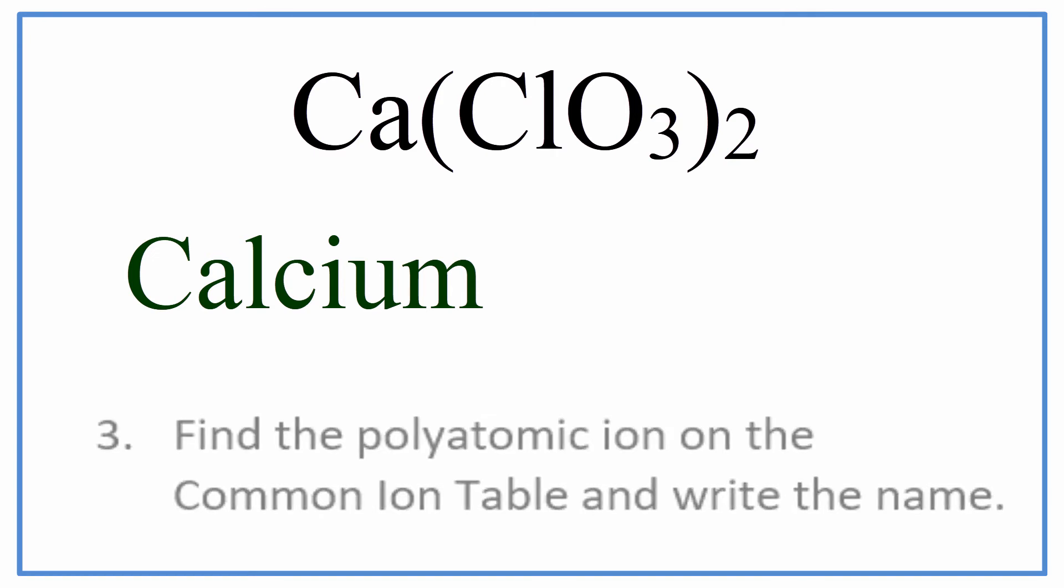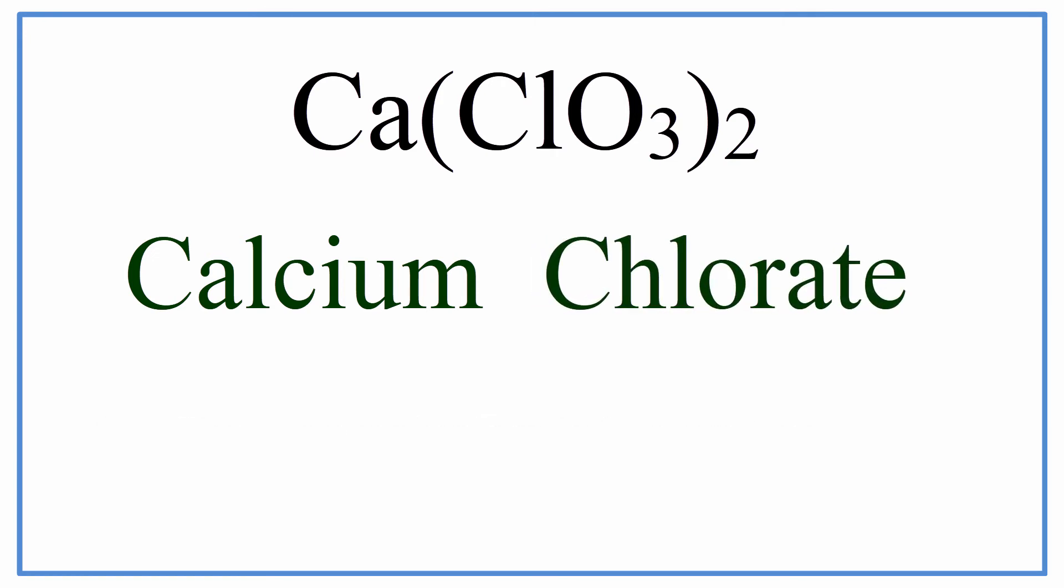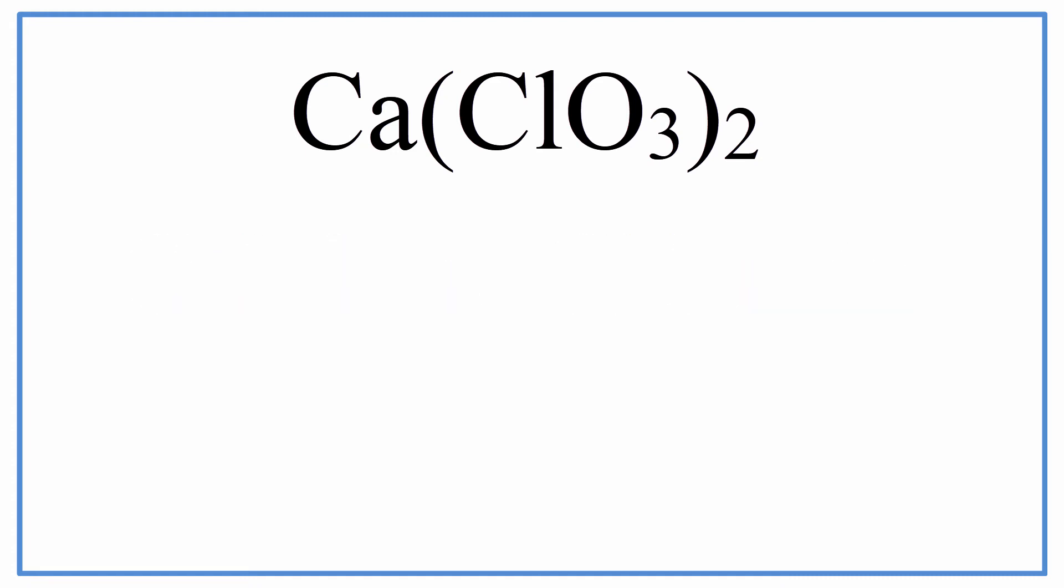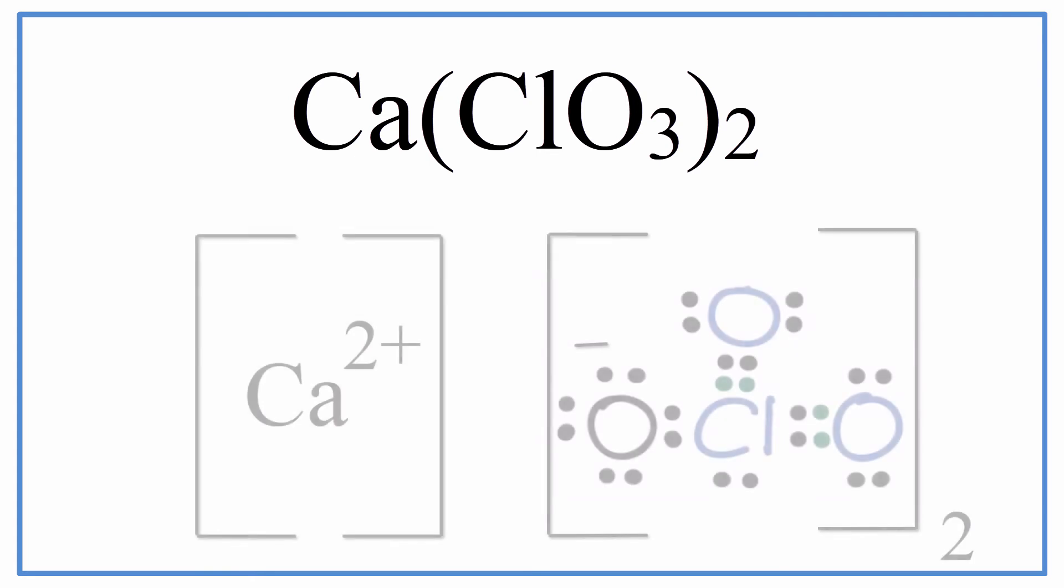For ClO3, we have chlorate, and that's the name for Ca(ClO3)2, calcium chlorate. You could also write a Lewis structure for this, and that might look something like this here.